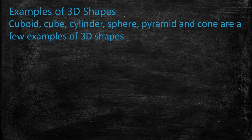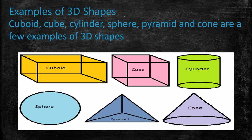Students, let's see some more examples of 3-D shapes. Examples of 3-D shapes include Cuboid, Cube, Cylinder, Sphere, Pyramid and Cone. Here you can see Cuboid, Cube, Cylinder, Sphere, Pyramid and Cone. These are a few examples of 3-D shapes because all of them have length, breadth and thickness.